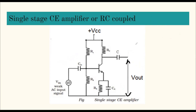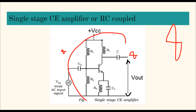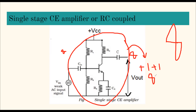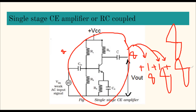If the signal is small and I need it much larger, I can add one more amplifier stage. The signal gets a little bigger after each stage. I can repeat this again and again — each time the signal increases further. This method of increasing amplification step by step is known as cascading.